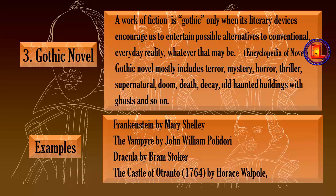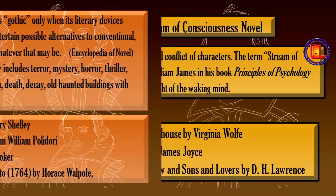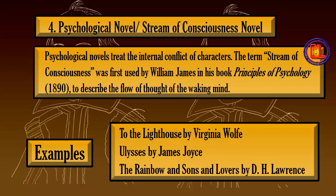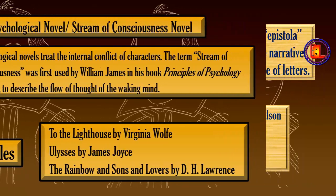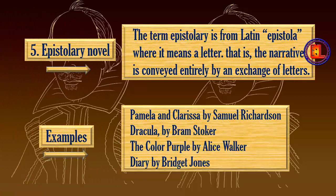Number 4: Psychological Novel, also known as the Stream of Consciousness Novel. The psychological novel treats the internal conflict of characters. The term 'stream of consciousness' was first used by William James in his book Principles of Psychology to describe the flow of thought of the waking mind. Examples of such novels are To the Lighthouse by Virginia Woolf, Ulysses by James Joyce, and Sons and Lovers by D.H. Lawrence.